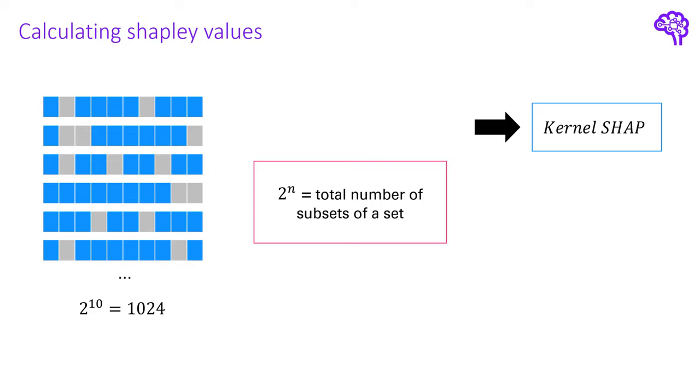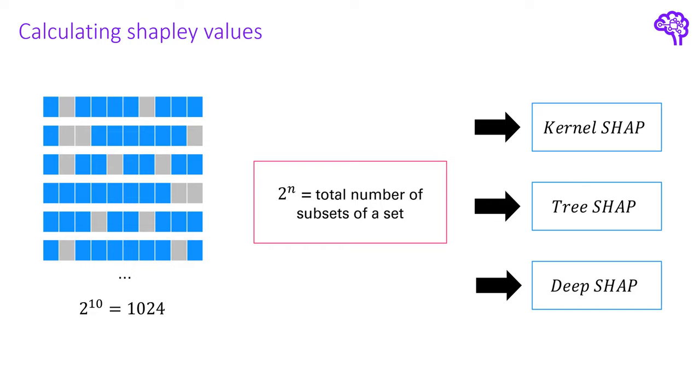This is quite similar to lime which we've seen in the last video. However here we don't really care about the proximity and instead we weight our samples according to how much information they contain. Remember that we previously said that large coalitions and small coalitions tell us most about the contribution of features. Besides kernel-shap there exist other approximation techniques for Shapley values. For example tree-shap or deep-shap which are used for tree-based models or deep neural networks respectively. These techniques are not really model agnostic anymore but can use the model internals to boost the performance when calculating Shapley values.